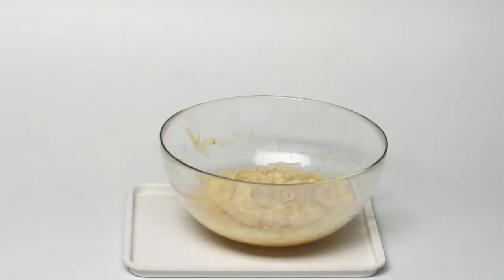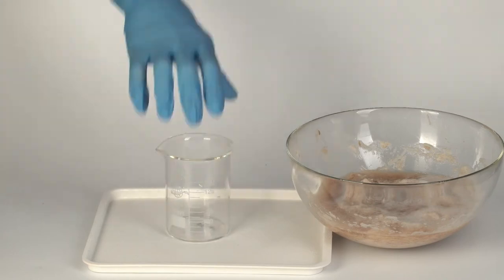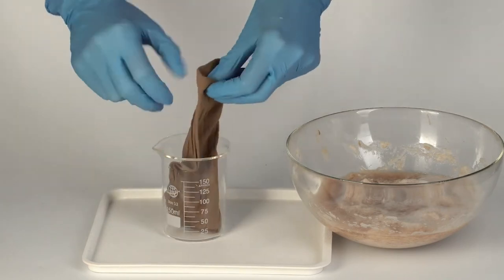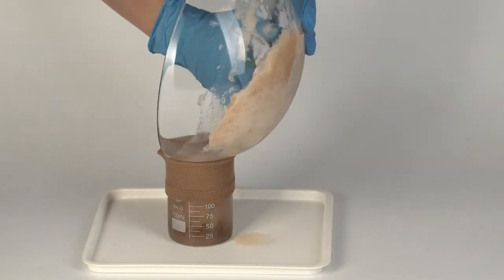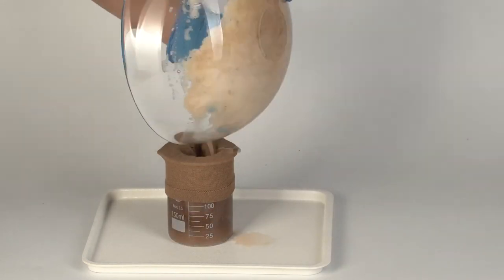Slip the sock onto the beaker. It will serve as a filter for potato cuttings. Carefully pour all the liquid from the bowl into the sock. Then remove the sock and squeeze all the liquid in it into the beaker.